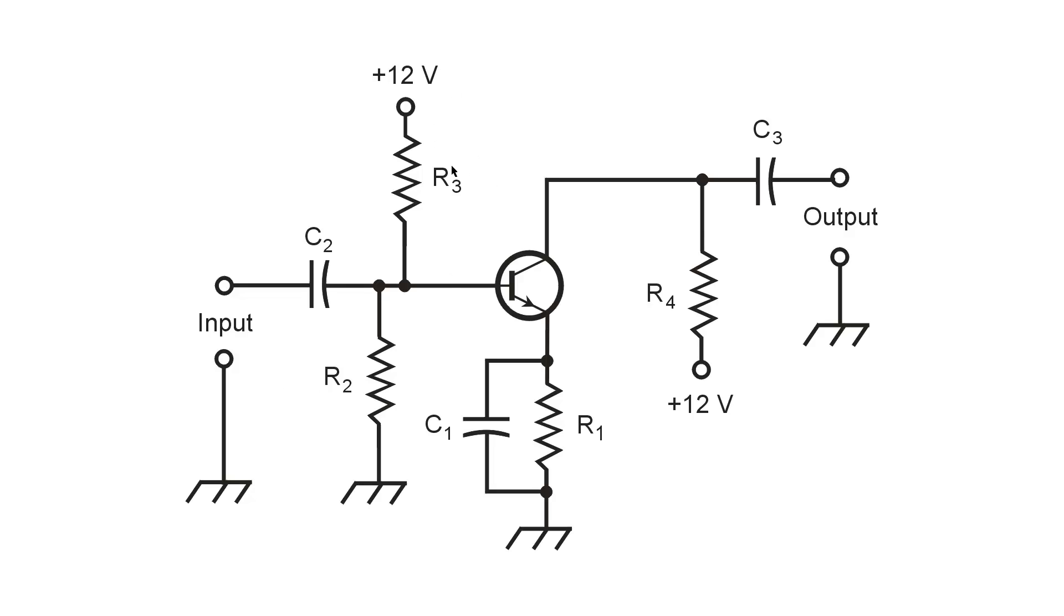R2 and R3 comprise a voltage divider that sets the DC base bias somewhere between 0 and plus 12 volts. C2 prevents that from being upset by whatever is at the input. Sometimes the secondary winding of a transformer, for example, might short that out and reduce this bias to zero. You don't want that. You don't want it to be determined by anything but R2 and R3, a voltage divider.